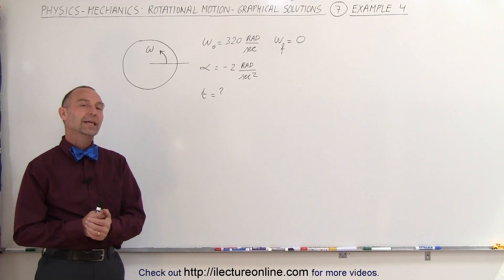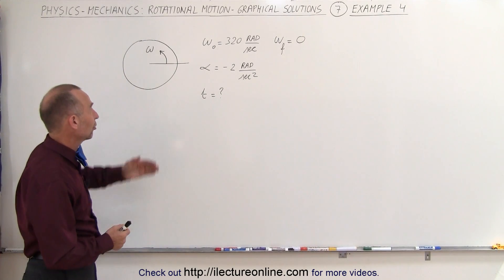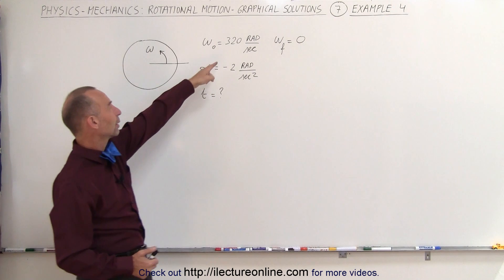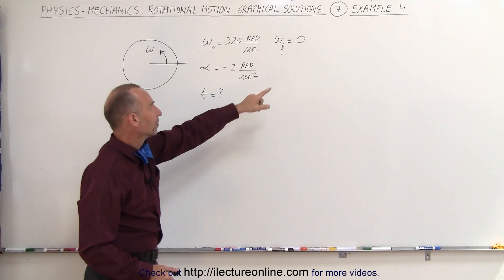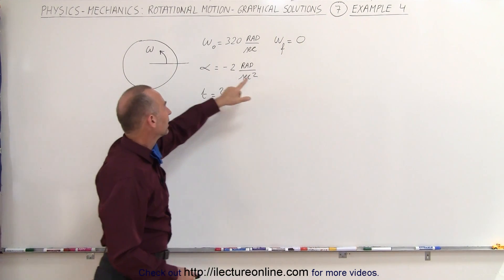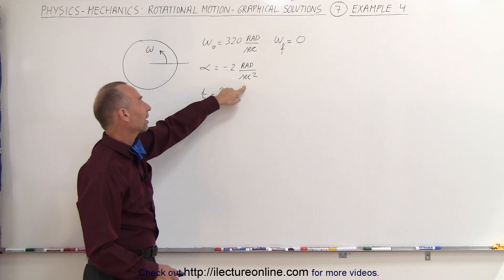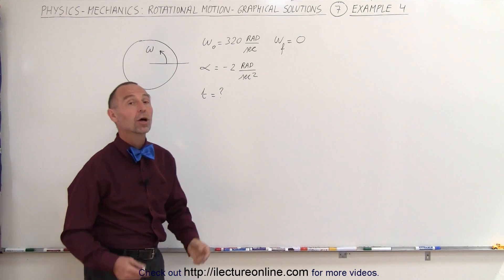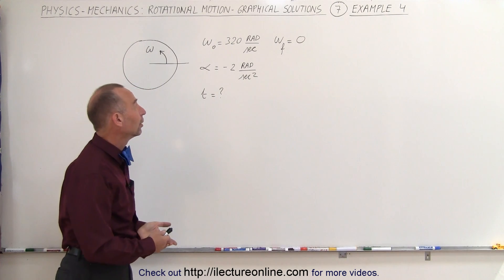Welcome to Electron Online. In our next example, we're given initial omega, initial angular velocity of 320 radians per second. The final velocity is 0. The acceleration is negative 2 radians per second squared, and you want to know how long it took to go from 320 to 0.